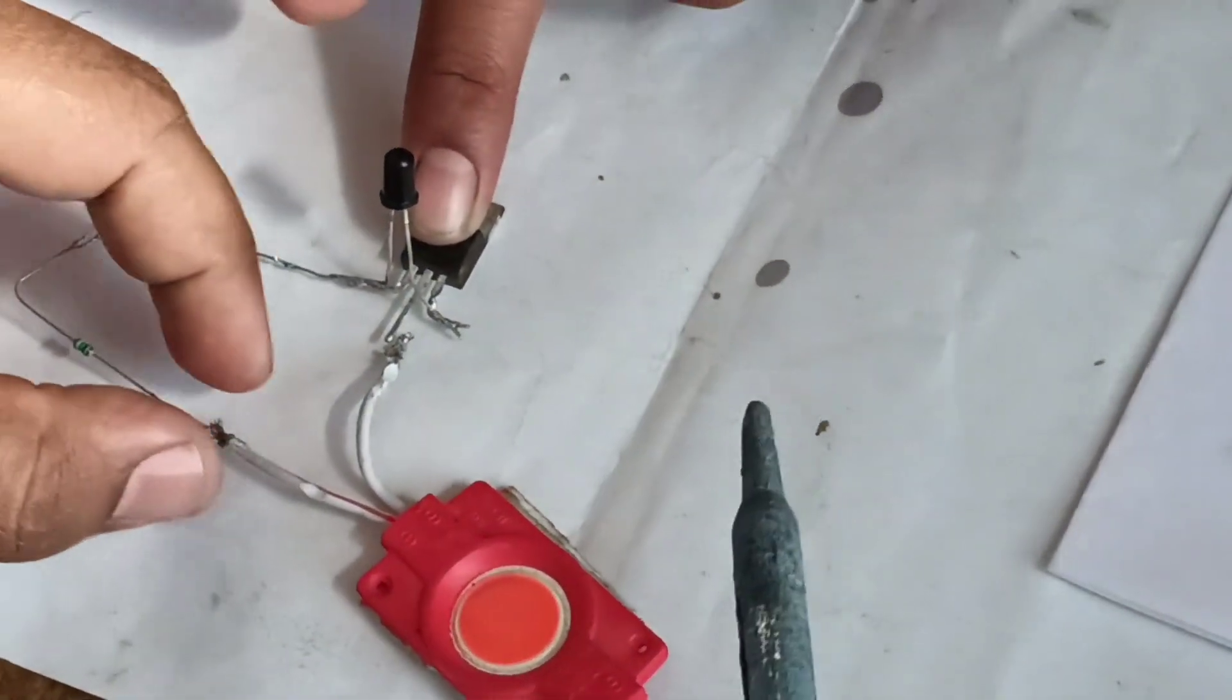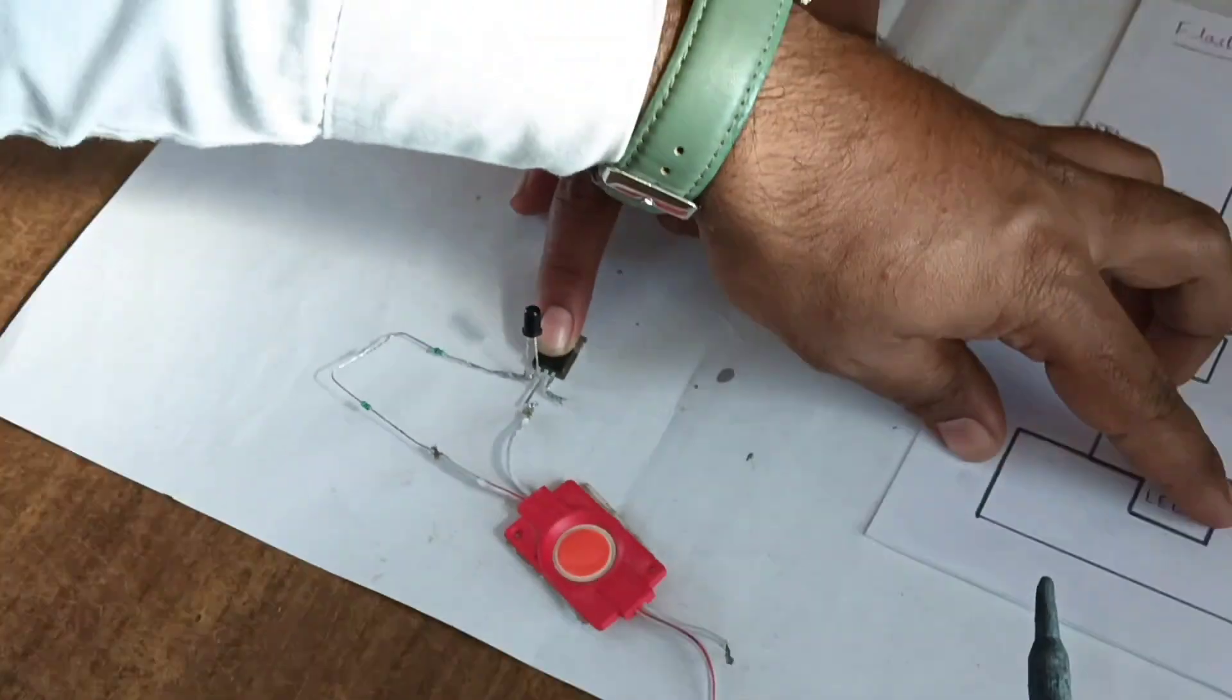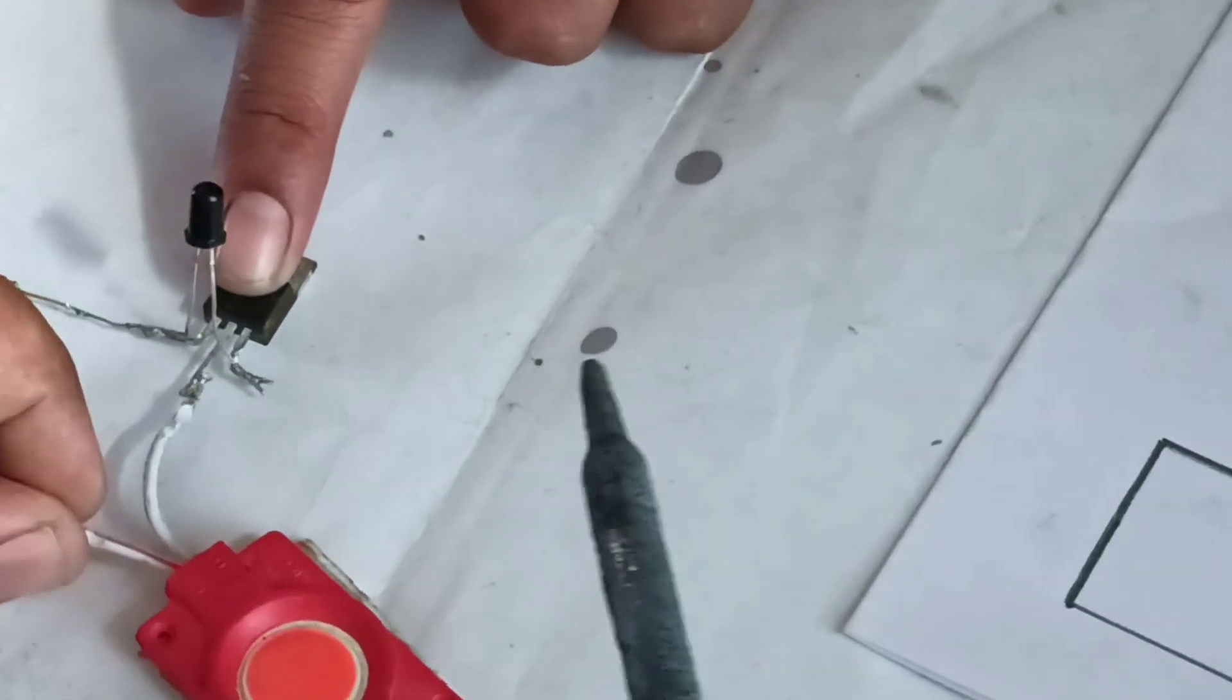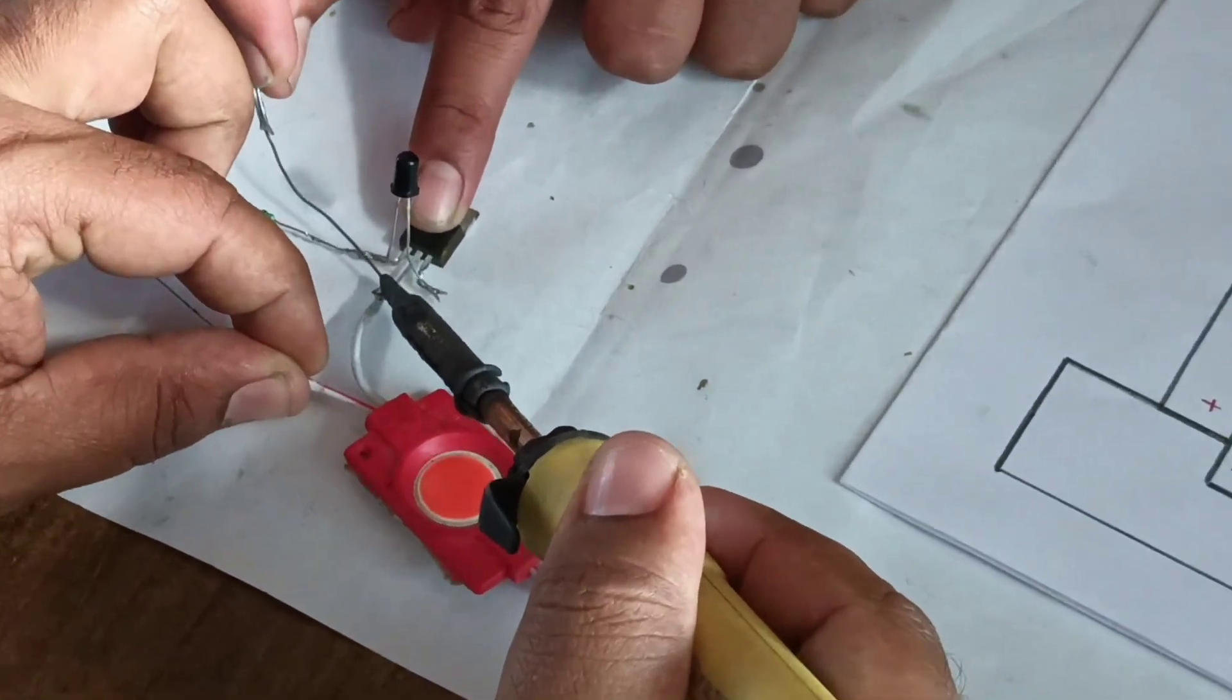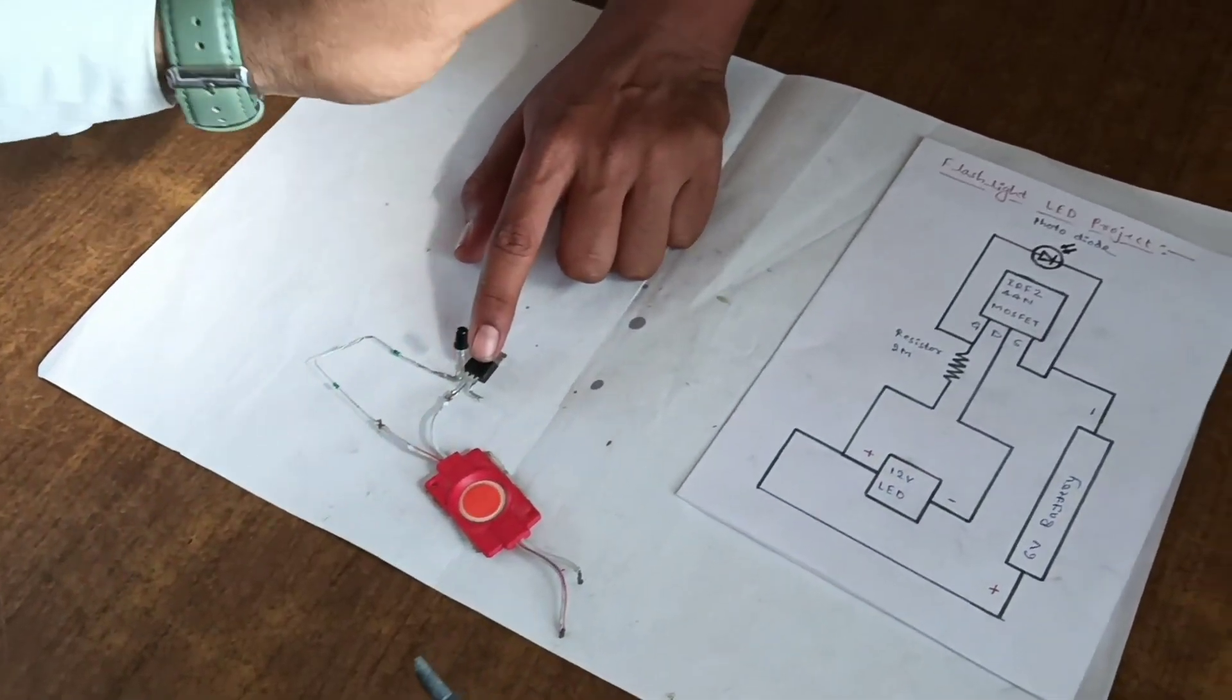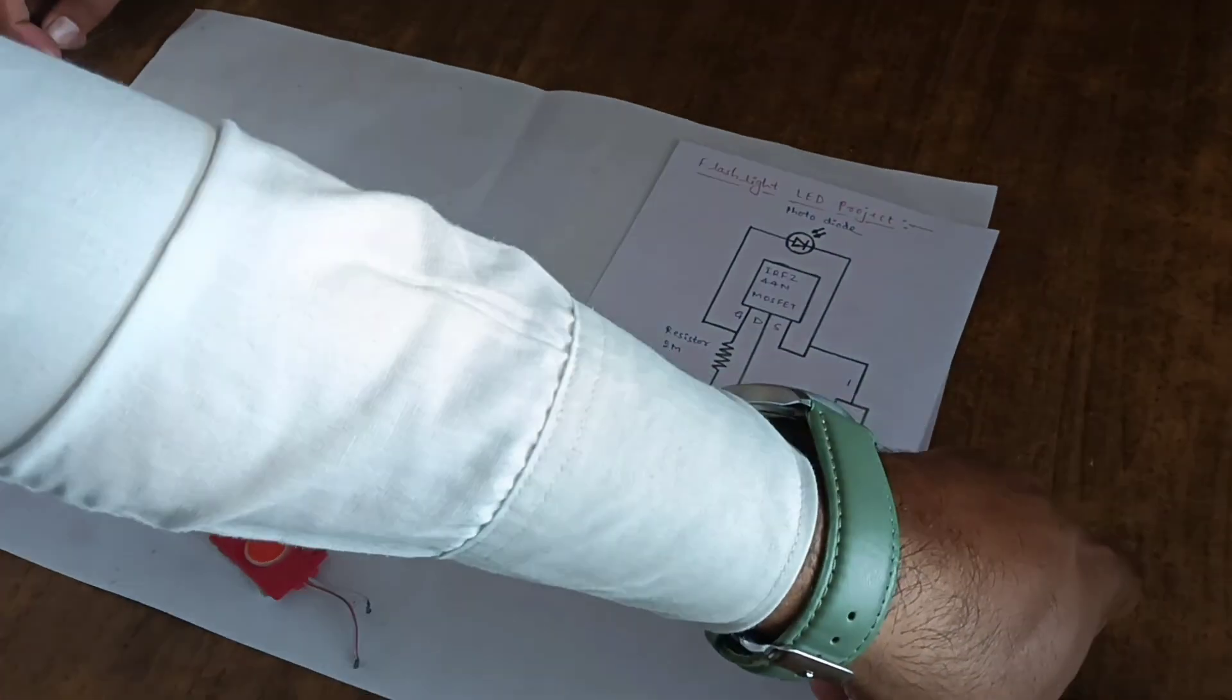Like that we connect negative of the 12 volt LED to the drain of MOSFET. Next connect 6 volt battery.